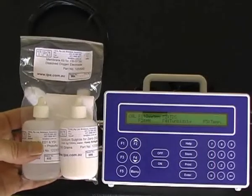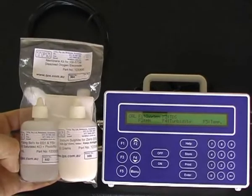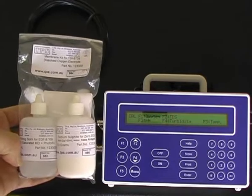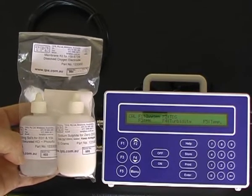The 90FLT is supplied with a dissolved oxygen membrane calibration kit, which includes sodium sulfite powder, a bottle of filling solution, membranes, and O-rings to fit the membranes.